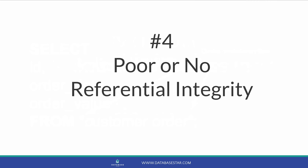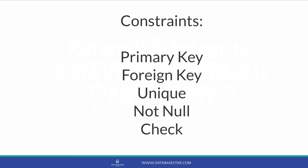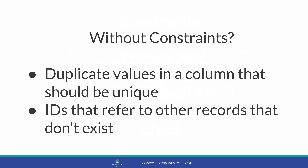Mistake number four is having poor or no referential integrity in your database. Referential integrity means ensuring the data in your database is high quality and meets the needs of the system. It's implemented partially in table design but mostly through database constraints. There are five types of constraints: primary key, foreign key, unique, not null, and check. Without these constraints, you may have missing values in required fields, duplicate values in columns expected to be unique, or IDs referencing records in other tables that don't exist.